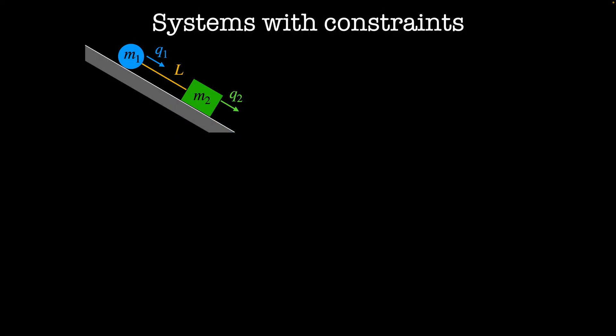In this video we'll learn how to optimize a Lagrangian system in the presence of constraints. Let's take a look at this example system. I have two masses sliding down a frictionless slope. The position of mass m1 is given by the generalized coordinate q1 and the position of mass m2 is given by the generalized coordinate q2. The constraint in this system is that the two masses are always separated by a fixed distance l. That constraint can be written as q1 equals q2 minus l.